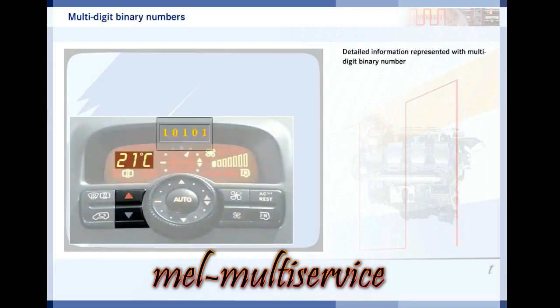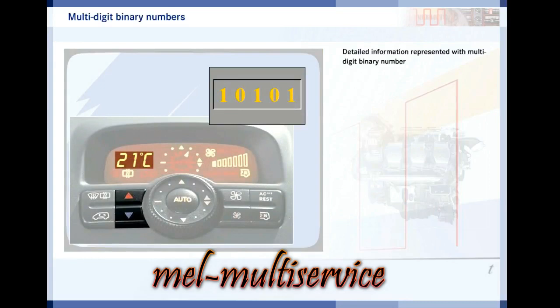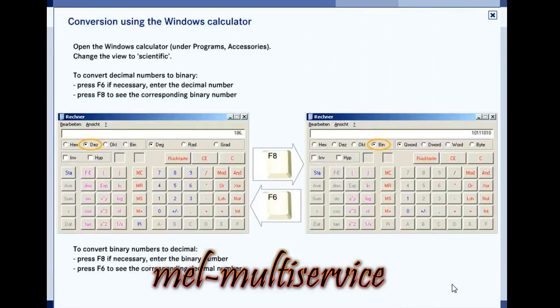Because binary signals only represent 0 or 1, detailed information must be encoded using chains of binary digits. Click the switch to set the temperature in the interior. Watch the number on the display as well as the one used inside the control unit. You may continue to change the temperature if you desire. You can also look at the additional information for an easy way to convert binary numbers into decimal and vice versa.